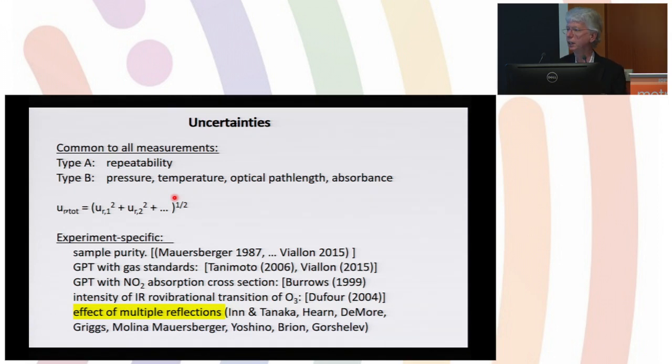We looked at the type A and type B reported uncertainties and added components where we thought necessary. In particular, we looked at purity. We also looked at the effect of multiple reflections, and in eight of the studies this actually had an impact on the uncertainties.